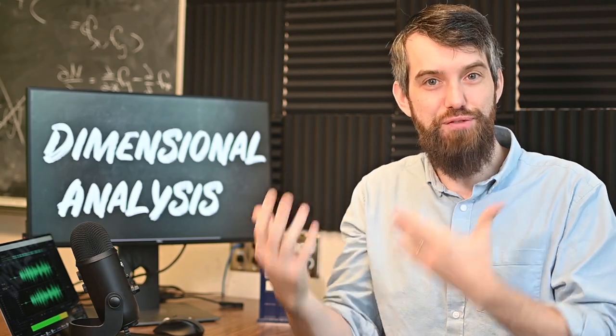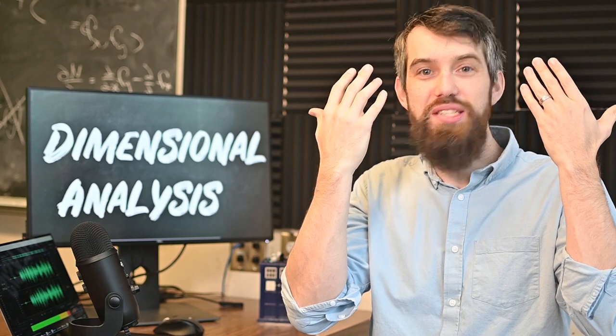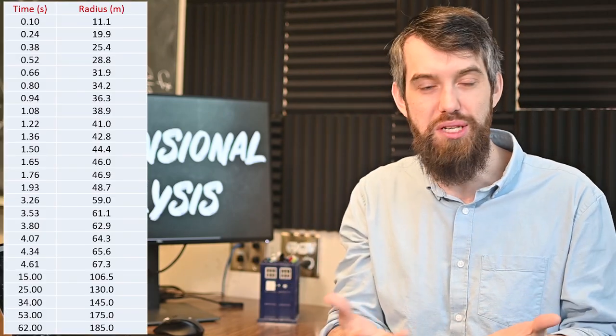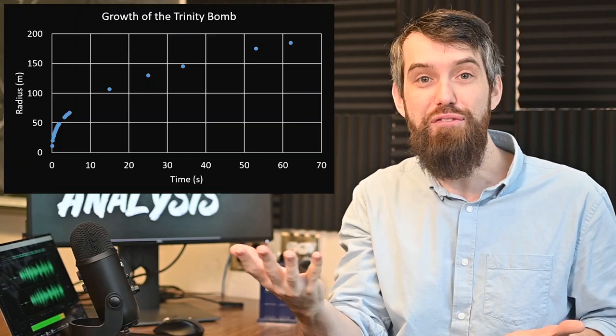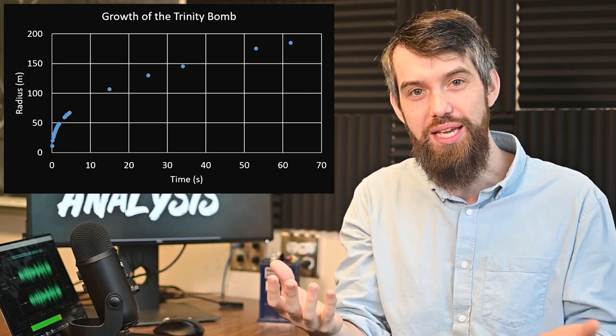So what this physicist first did was he collected all of these different radiuses and times. And from that, you can actually graph and you can show what the relationship between radius and time is.